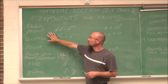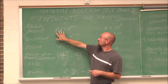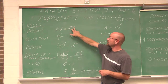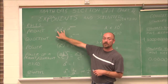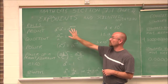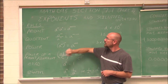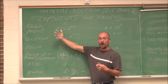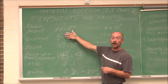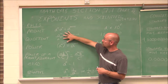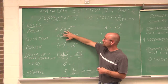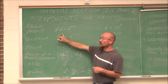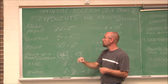To review: the product rule for exponents states that if we have a product, we add the exponents when they have the same base. The quotient rule — since multiplication and division are opposite operations — we do the opposite operation. Here we have quotients, so we subtract the top minus the bottom. We have to be careful: it's always the top minus the bottom.